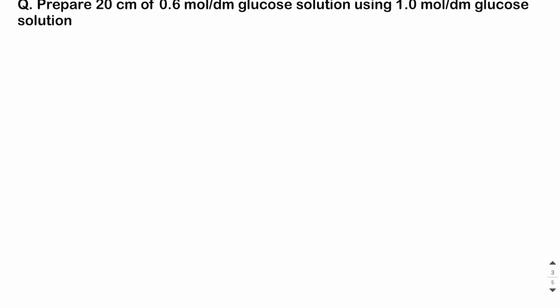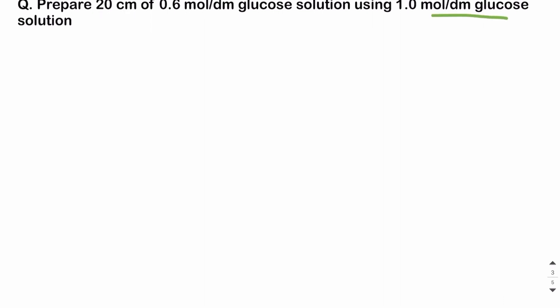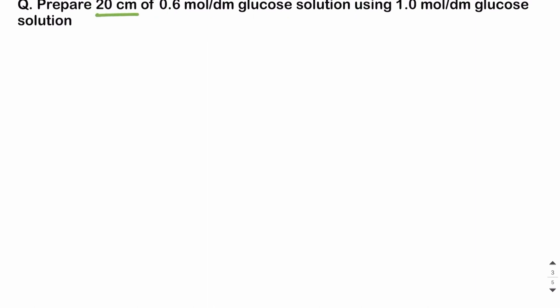Let's solve a question — you can pause the video for 5 minutes and try it yourself before resuming. The question: Prepare 20 cm³ of 0.6 mole per dm³ glucose solution using 1.0 mole per dm³ glucose solution. Here, 1.0 mole per dm³ glucose is the stock solution, so C1 = 1.0. The desired solution gives us V2 = 20 cm³ and C2 = 0.6 mole per dm³.